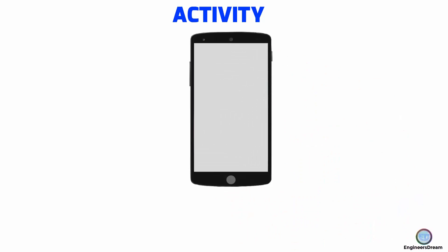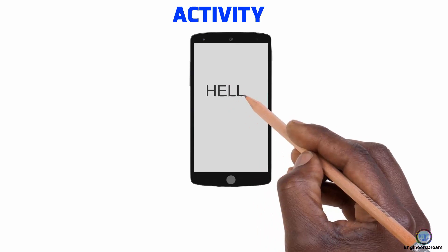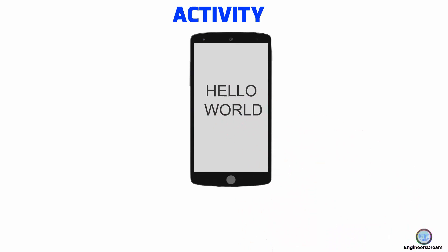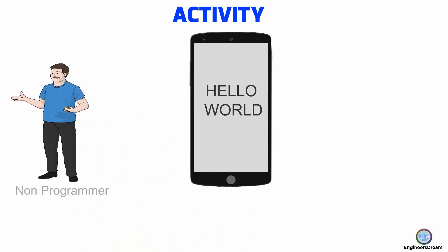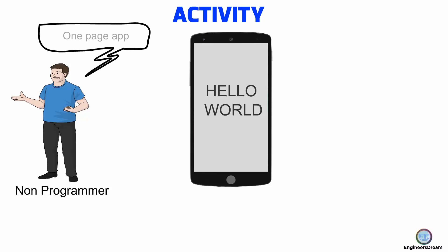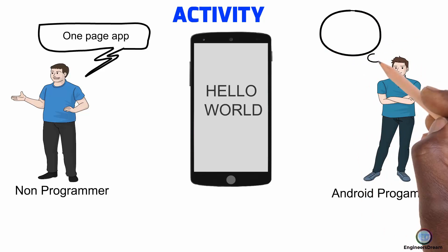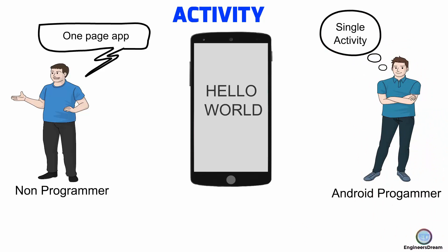Suppose you create a simple Hello World application which consists of a single page. If you show this application to a non-programmer, for them this is just an application with a single page. But as Android developers, instead of calling it a page, we call it an activity. So according to me, this is an Android app which consists of a single activity.